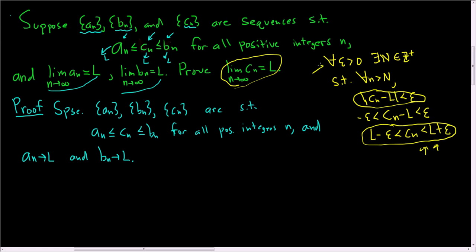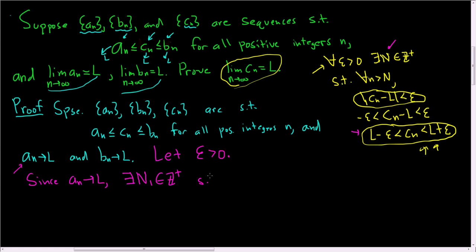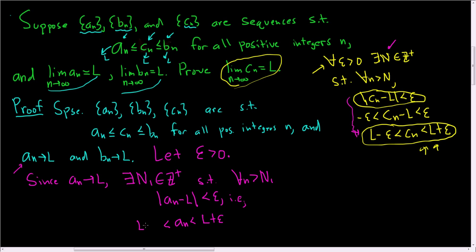To start using this definition, we begin by assuming we have an epsilon greater than zero. Let epsilon be greater than zero. Since a_n converges to l, there exists a positive integer — we'll call it N_1 — such that for all little n greater than N_1, the distance between a_n and l is smaller than epsilon. We can write this as: l − epsilon < a_n < l + epsilon, and this is true for all little n greater than capital N_1.